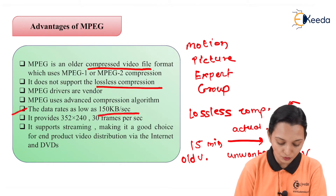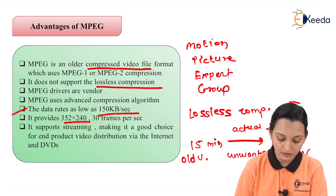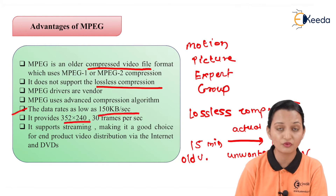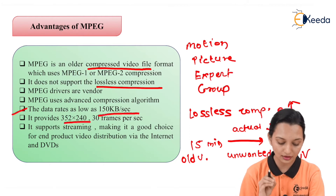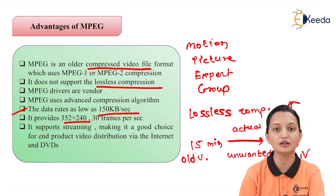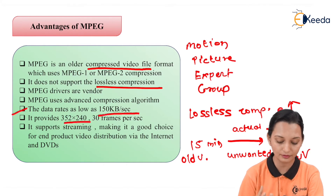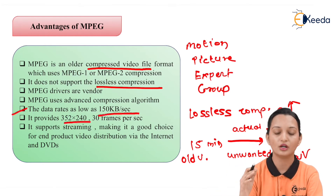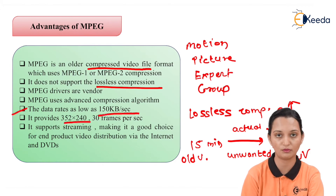MPEG provides a resolution of 352 x 240 at 30 frames per second. It supports streaming, making it a good choice for end-product video distribution via the internet and DVDs. Streaming means we require minimum storage for the database, and we can store or distribute MPEG video files efficiently.